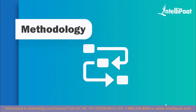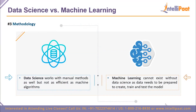On methodologies: data science works with multiple manual methodologies, but when comparing it to machine learning's algorithm-driven efficiency, data science has limitations. Conversely, machine learning cannot exist without data science — all the data that machine learning algorithms use must come from data science processes: data cleansing, pre-treatment, and data preparation. Only then are algorithms applied to create, train, test, and optimize models.